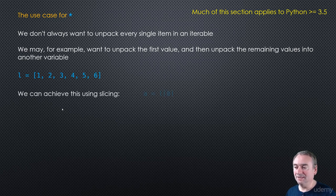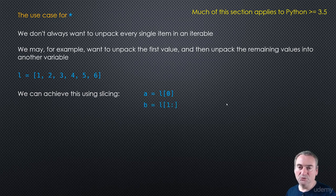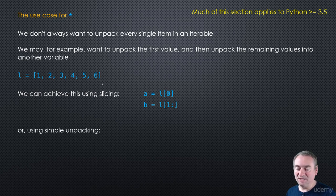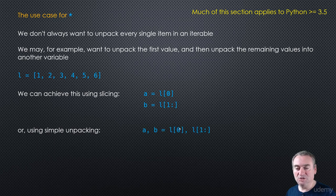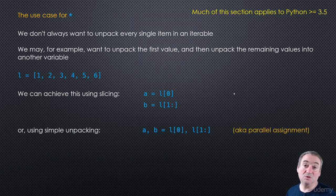We can do this by using slicing. We could say A is equal to L[0] and then B is equal to L[1:] to the end of the list. So we end up with A being 1 and B being 2, 3, 4, 5, 6. Or we can use simple unpacking and combine these two lines into a single line — unpacking L[0] into A and L[1:] into B. This is also sometimes called parallel assignment, but it's just unpacking.